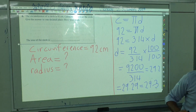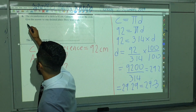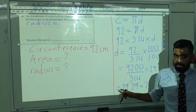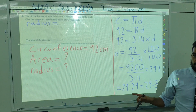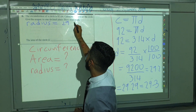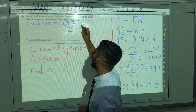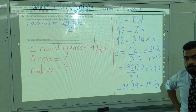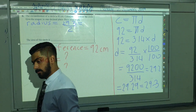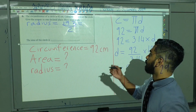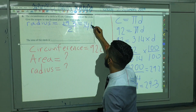So the diameter is 29.3 cm. Now, how much is the radius? The radius is the diameter divided by two — so 29.3 divided by 2 gives us 14.65 cm.